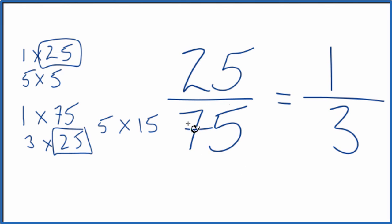If you didn't know that 25 went into 75 three times, you could have divided 25 by 5, then 75 by 5, and you'd have 3/15, which you could reduce down to 1/3 a little bit easier.